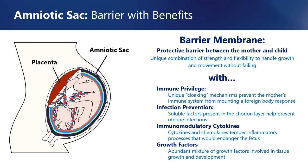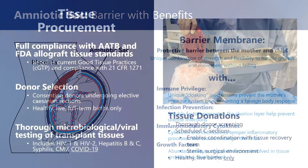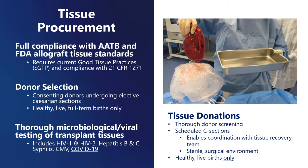The placental membranes also express antimicrobial factors and immunomodulatory cytokines that serve to prevent infections and inflammatory conditions within the uterine environment. And as would be expected in any rapidly growing and developing tissue, the amnion and chorion membranes contain a plethora of active growth factors. Placental allograft tissues are procured using strict guidelines put forth by the American Association of Tissue Banks and the FDA. Potential donors are identified as healthy women undergoing elective cesarean sections at the end of full-term pregnancies. All donated tissues are thoroughly screened for microbiological and viral pathogens in accordance with AATB and FDA guidelines.